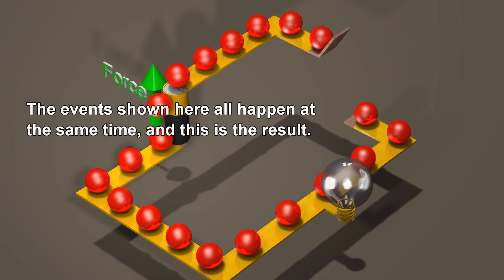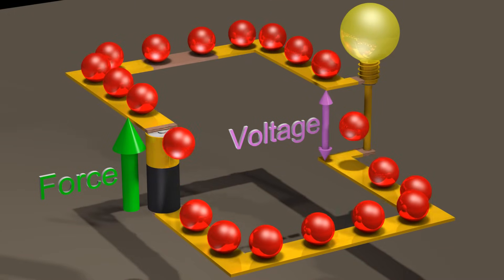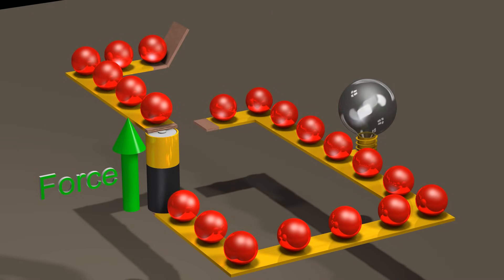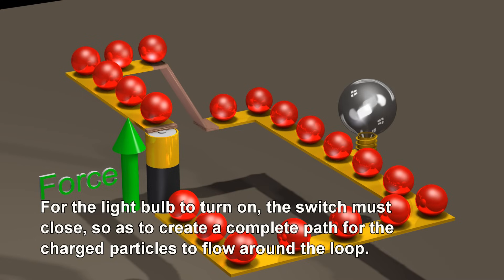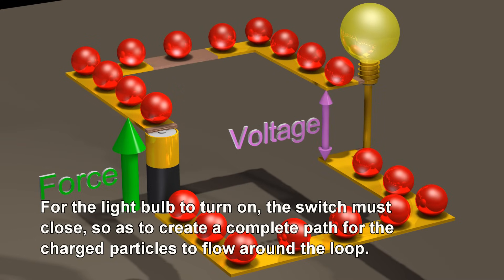The events shown here all happen at the same time, and this is the result. For the light bulb to turn on, the switch must close, so as to create a complete path for the charged particles to flow around the loop.